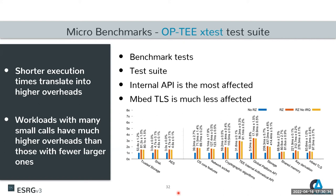For evaluation, starting with performance, we ran microbenchmarks using the OP-TEE test suite, which provides storage, SHA, and AES algorithm benchmarks and exercises varying workloads on the secure world. Looking at the internal API test group, we see it is among the most impacted — about four times slower execution time. However, looking at the mbedTLS tests, they are not affected as much. We conclude that shorter execution times translate into higher overheads.